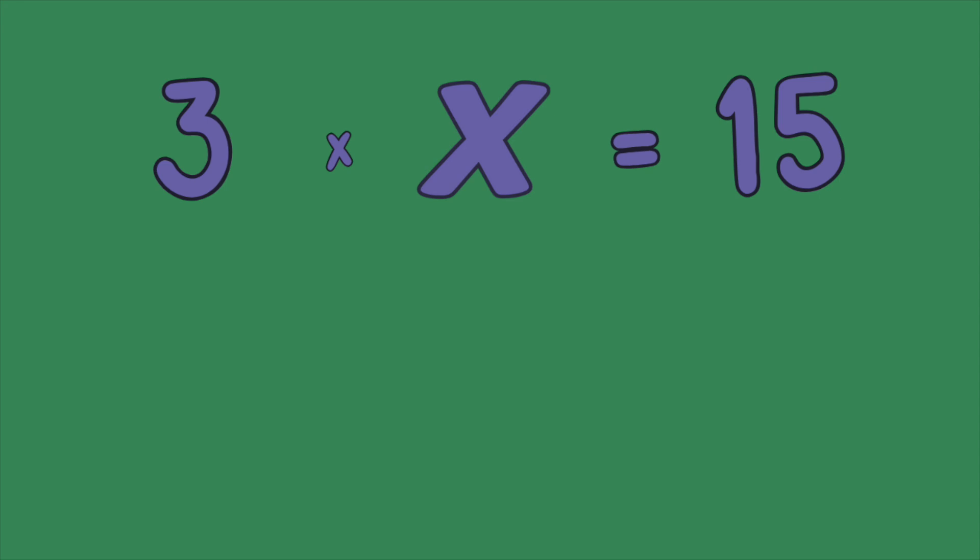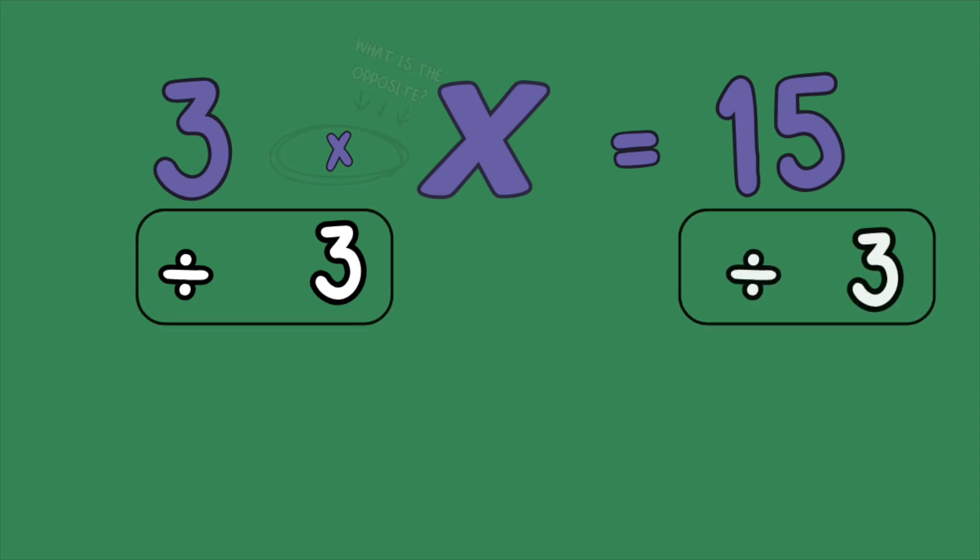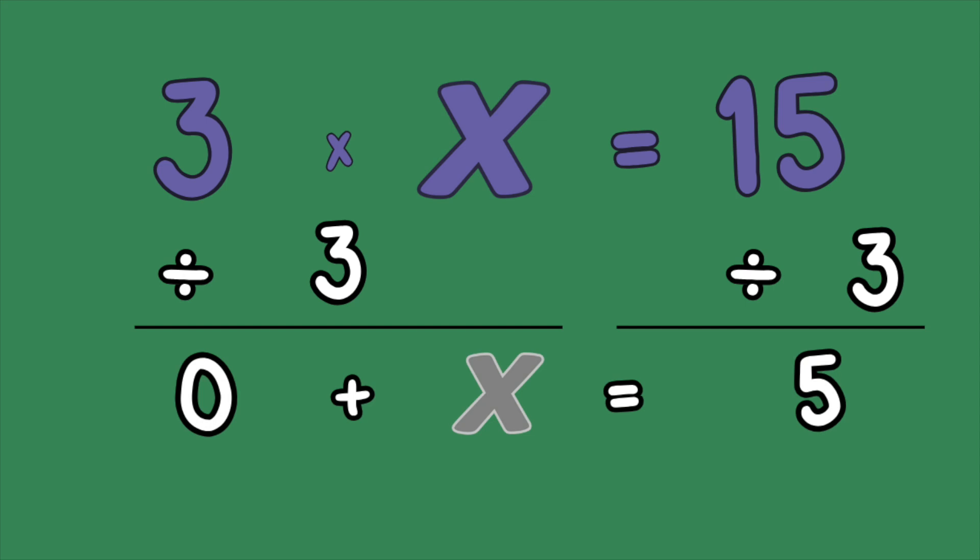3 times x equals 15. We're asking, 3 times what number equals 15? To do this, we need to do the opposite of multiplication. What's that? Division. To solve, we divide 15 by 3. 15 divided by 3 equals 5. So x equals 5.